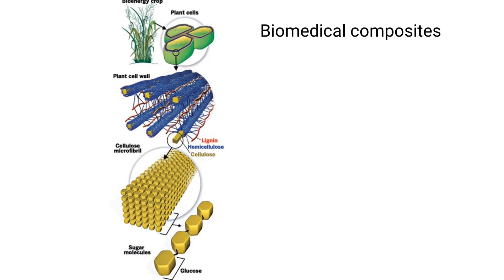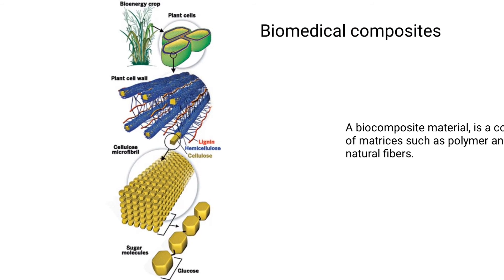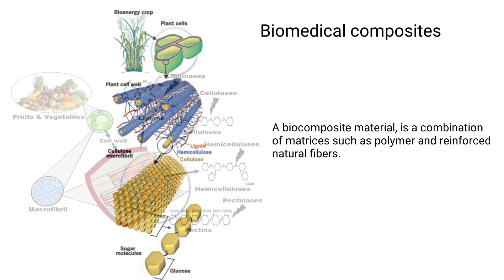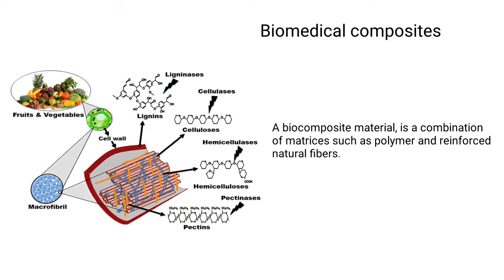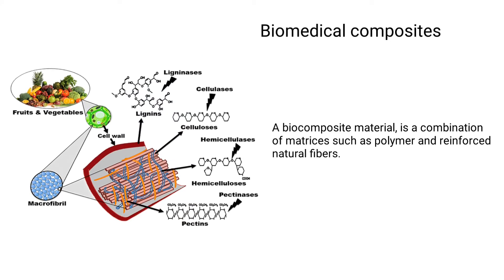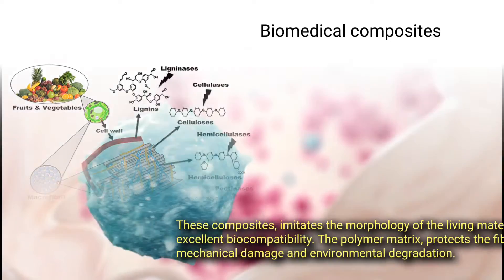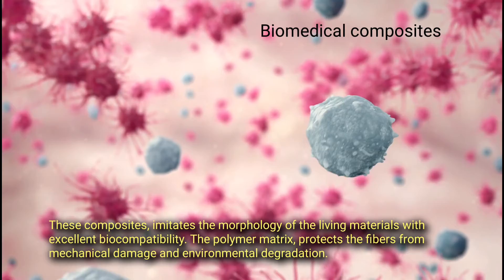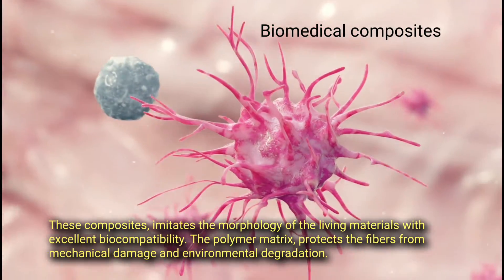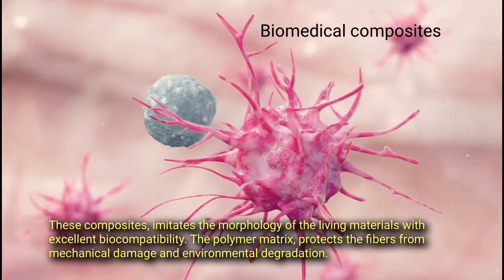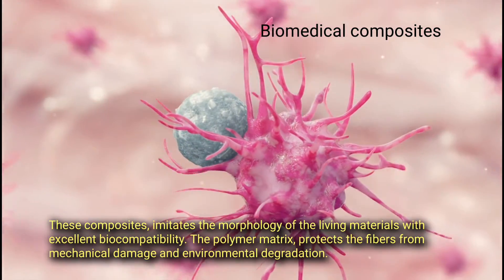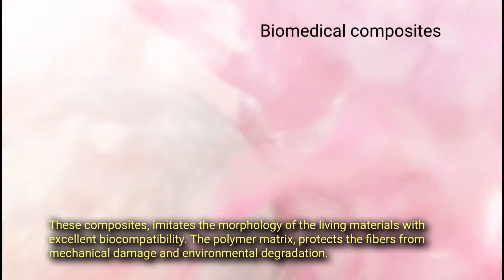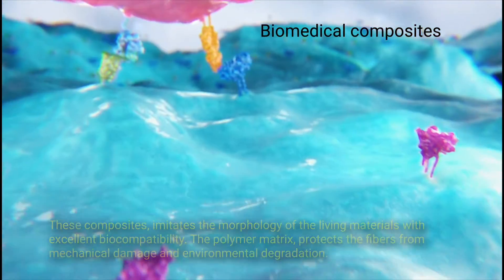A biocomposite material is a combination of matrices such as polymers and reinforced natural fibers. These composites imitate the morphology of living materials with excellent biocompatibility. The polymer matrix protects the fibers from mechanical damage and environmental degradation.